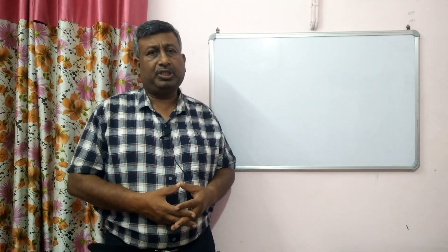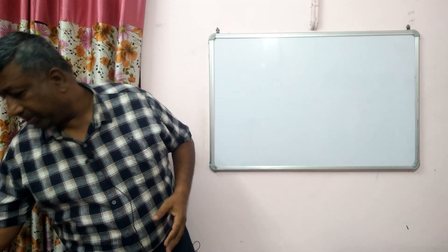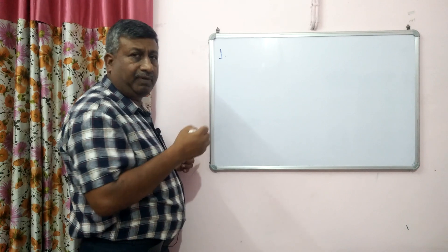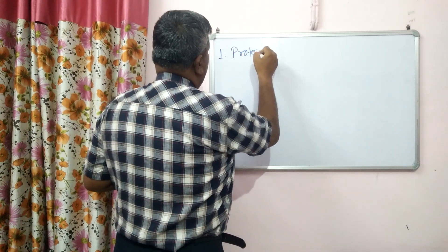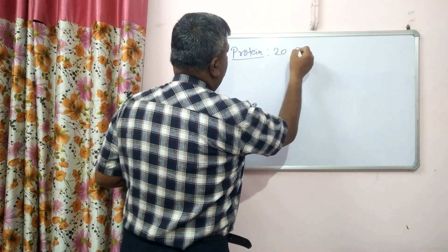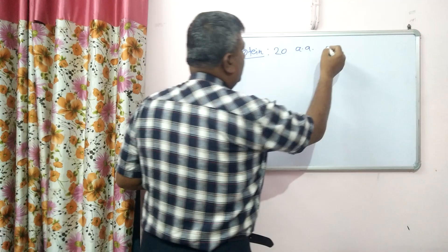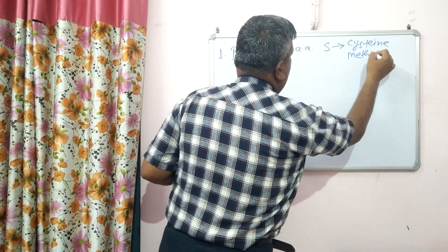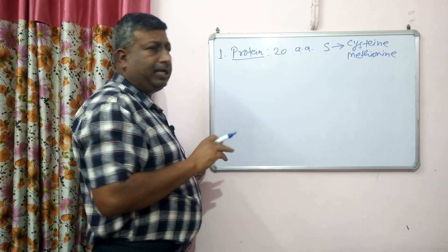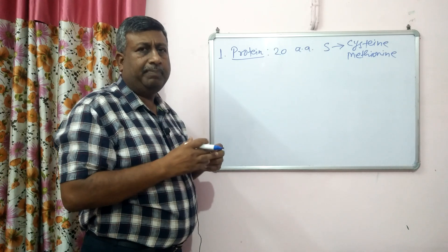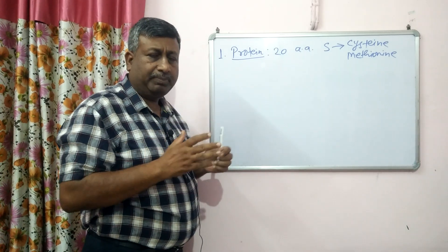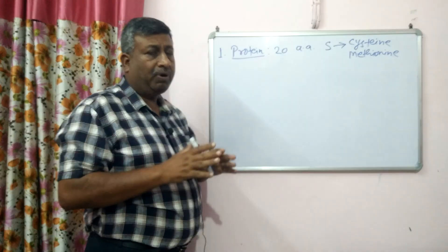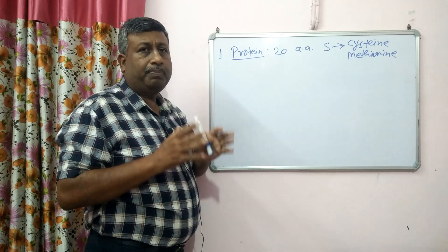The number one important function of sulfur is that it is involved in protein synthesis. Protein is composed of amino acids, and there are 20 amino acids. The sulfur-containing amino acids are two: cysteine and methionine. These are sulfur-containing amino acids, and protein cannot be formed without all 20 amino acids.